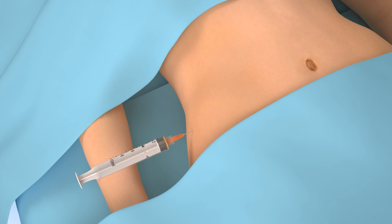The extracted fat cells are collected in a syringe. We also draw a small sample of blood to be used later.